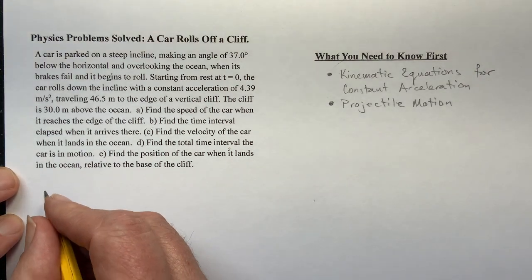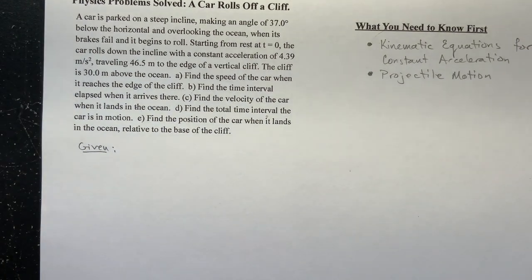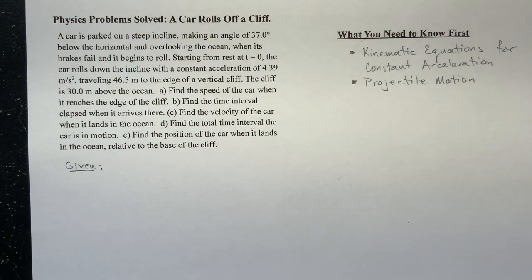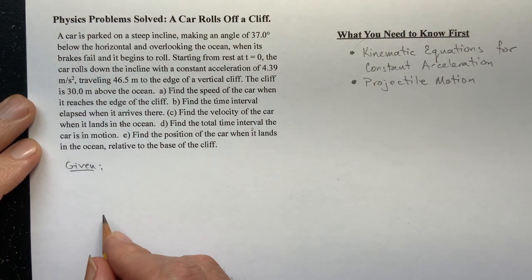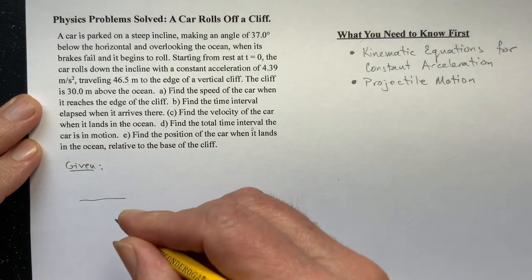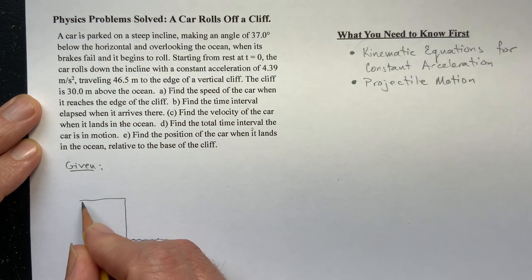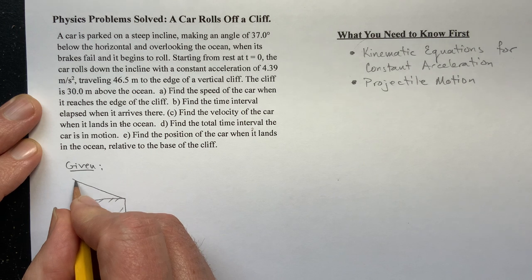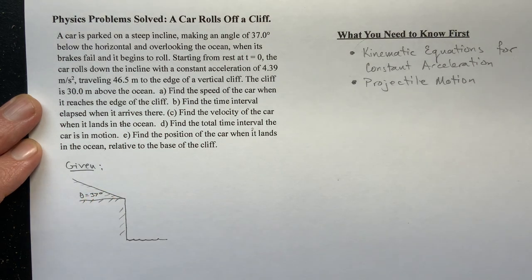Let's start out by drawing a picture of the problem. This is really a two-part problem: the car rolling down the ramp, and then once it leaves the ramp it becomes a projectile under only the acceleration due to gravity, which is straight down. So here's our cliff, the water below it, and the ramp at 37 degrees.